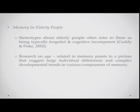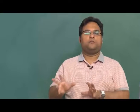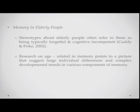Let us now move to the memory aspects of elderly people, following the lifespan development approach. Stereotypes about elderly people often refer to them as typically forgetful and cognitively incompetent. However, research on age-related changes in memory points to a picture of larger individual differences and complex developmental trends. The picture is not really clear — you cannot definitively say there is a significant decline in elderly people's memory, unless they are suffering from a disease like Alzheimer's or dementia.